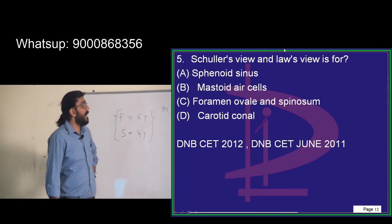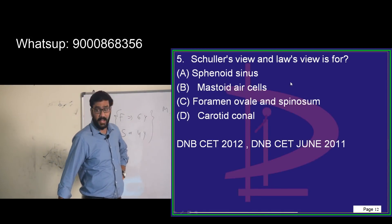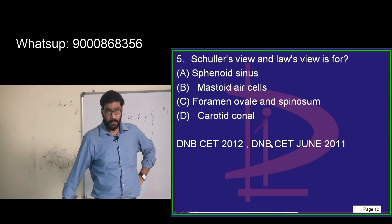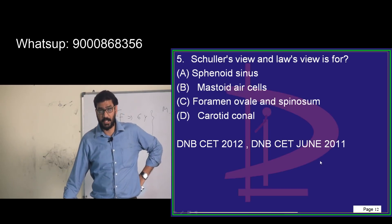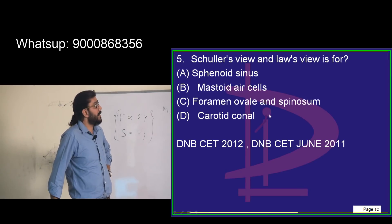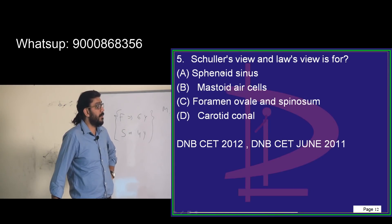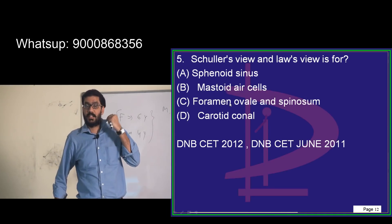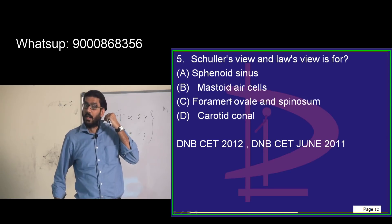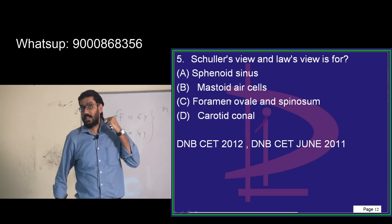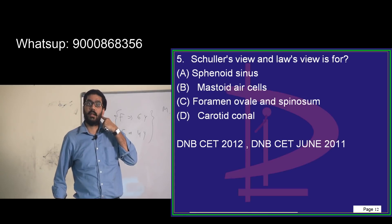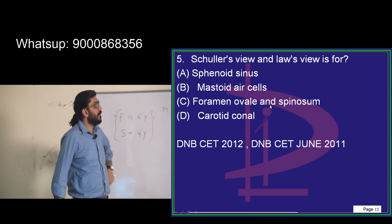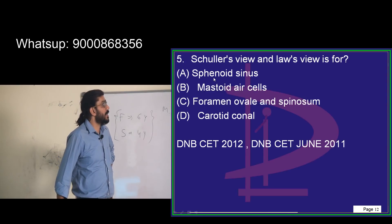Next is Schüller's view and Law's view — both are different. Schüller's view: you might have bought a Schüller's t-shirt, Schüller's pant, or trousers — it's a company name, easy to remember. So where do you find this 'Schüller's'? This is the collar of my shirt, for example. You can find the Schüller's sign or logo over here — it is nearer to one bony projection.